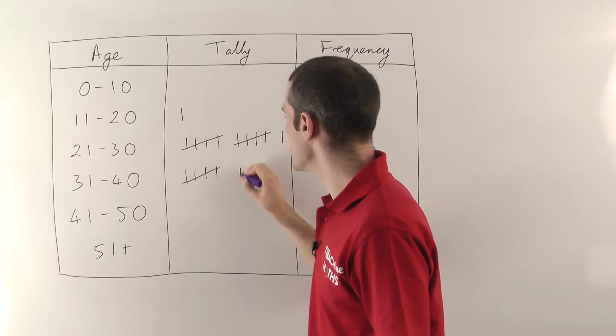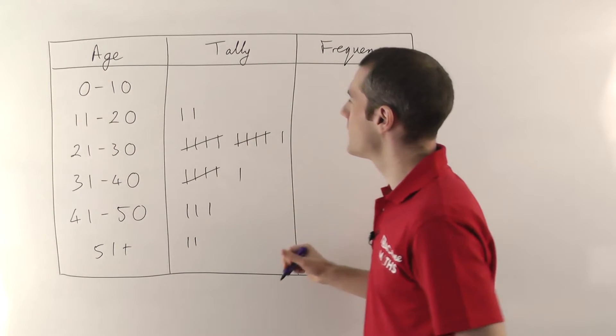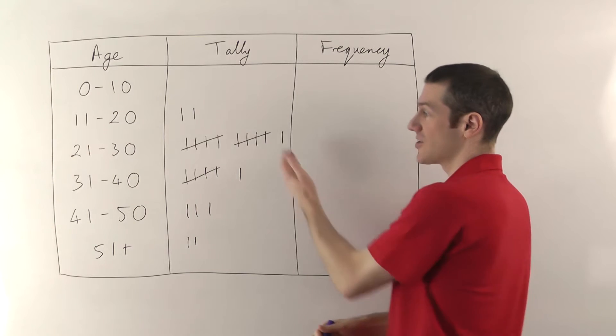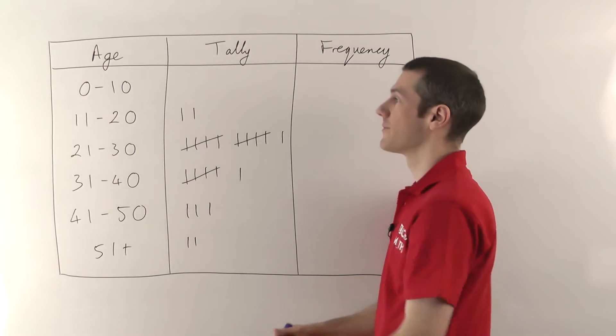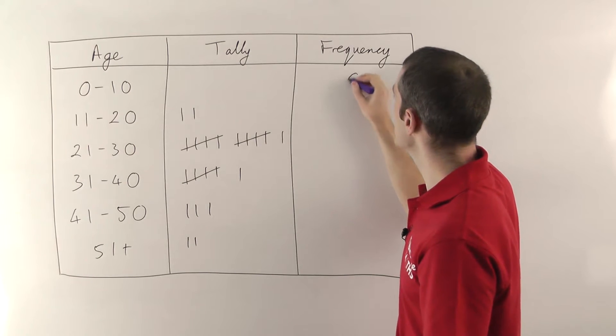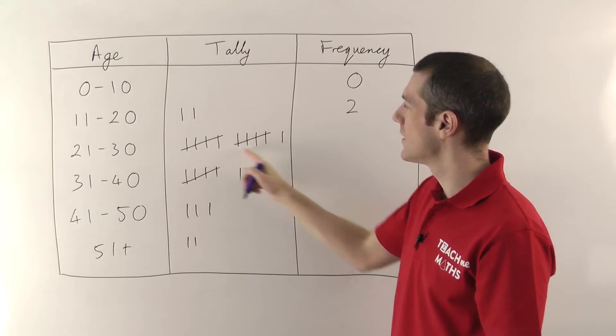So you go through like this doing a whole bunch of tallies. And once you've finished, you then fill out the frequencies. Now the frequency is very simple. It's just the total number of all the tally marks that you've got. So if you've got no tally marks here, you write zero in the frequency column. Two tally marks, you put two here.